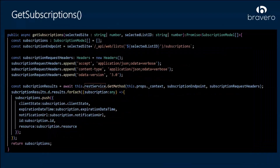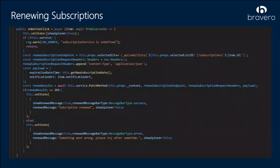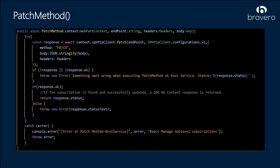This is a small code sample. The get subscriptions method uses a GET request and fetches the available subscriptions. For renewing the subscriptions, I used a PATCH method and sent a payload — the payload contains the expiration date time and the notification URL. This is a simple HTTP call used to renew the subscription. This sample is available in the PNP samples gallery and is an example of how we can work with SharePoint webhook subscriptions, which can of course be improved in any way appropriate for one's own needs.